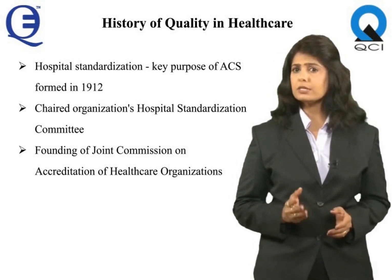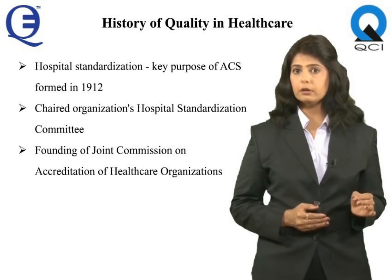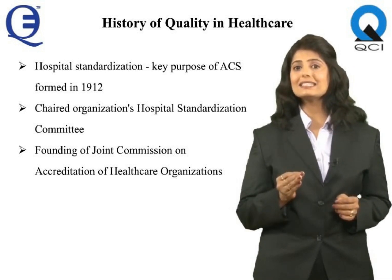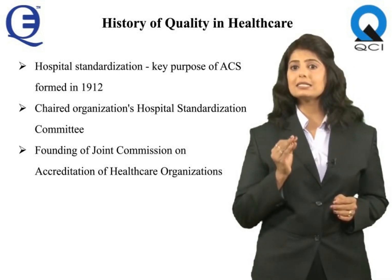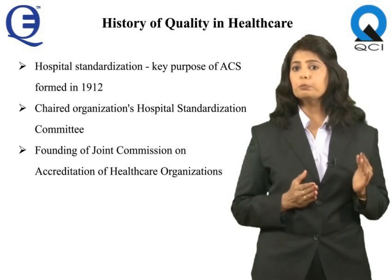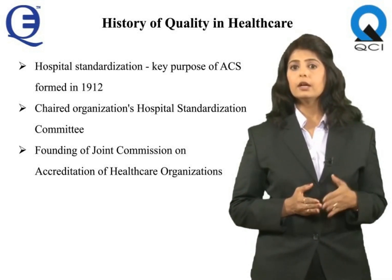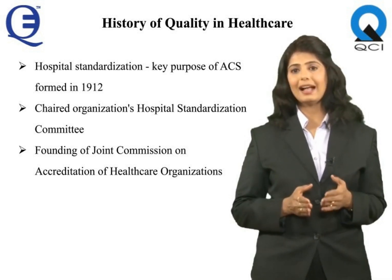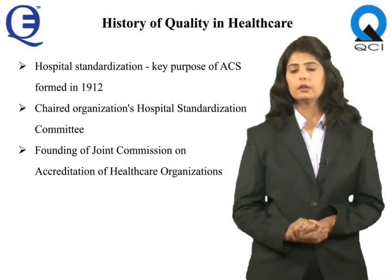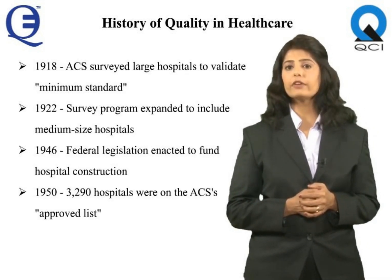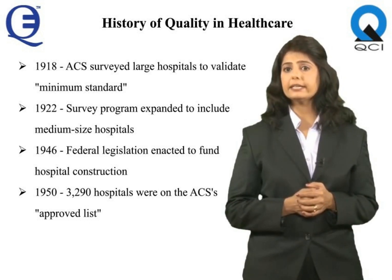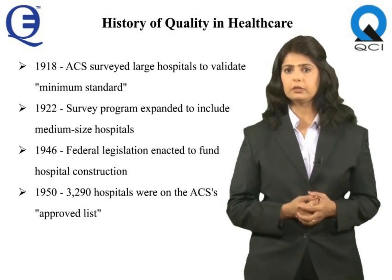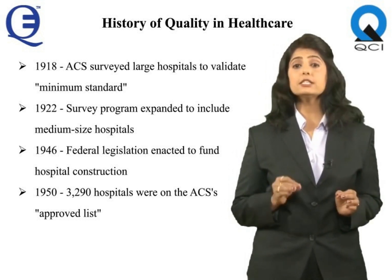The program's concept was clear. Knowledgeable professionals should assess hospital conditions and try to achieve consensus among them regarding standards that would have the greatest effect on improving patient care. This principle would become fundamental to hospital standardization and later to hospital accreditation. By 1918, the ACS was serving large hospitals to validate the minimum standard to be used for its hospital standardization program. With the minimum standard in place, by 1922, the survey program expanded to include medium-sized hospitals.